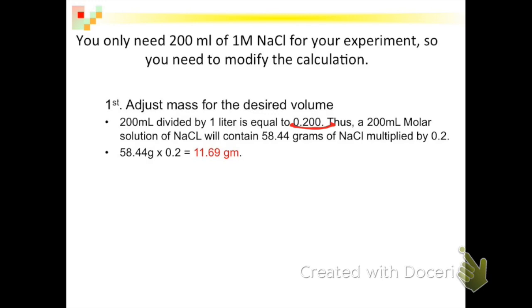Thus, a 200 milliliter one molar solution of sodium chloride will contain 58.44 grams of sodium chloride multiplied by 0.2. 58.44 grams times 0.2 is equal to 11.69 grams. So 200 milliliters of our one molar solution contains 11.69 grams of sodium chloride. We adjusted for the volume we need, so now we'll know how much sodium chloride to put in 200 milliliters.